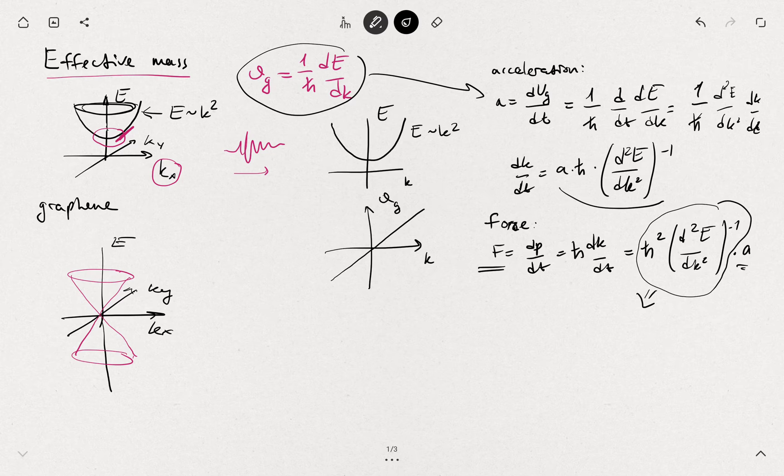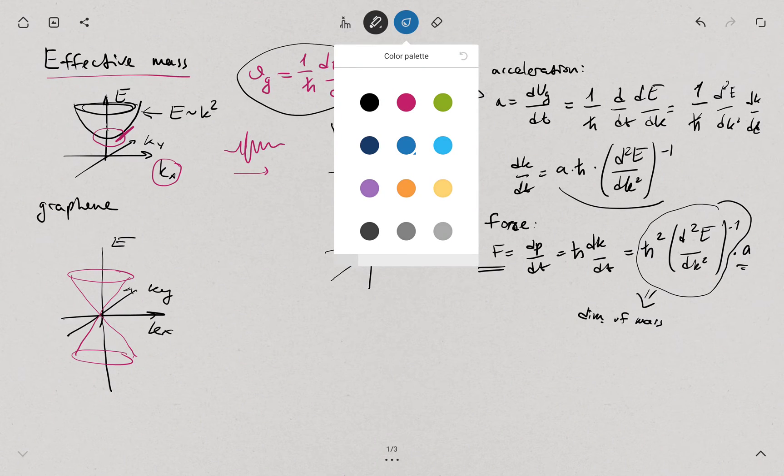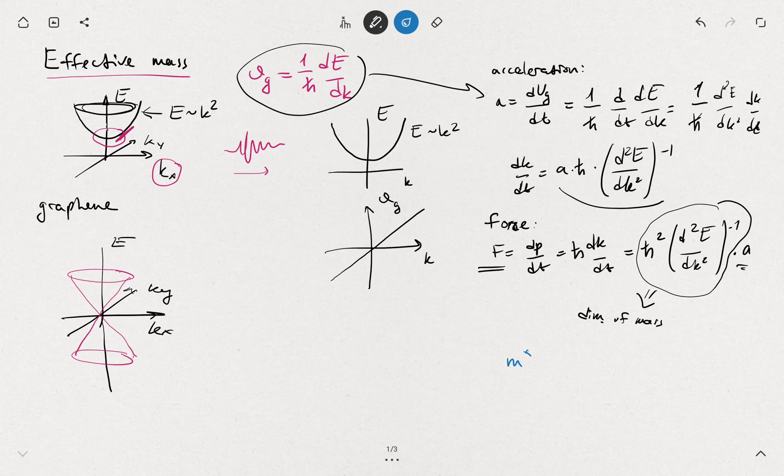This part here actually has a dimension of mass. You can check force equals mass times acceleration, similar to what we did for the Drude model. This is a dimension of mass. That's where the concept of effective mass comes from, usually labeled m*, and you write it as ℏ² (d²E/dk²)⁻¹, so it's inverse curvature of the dispersion relation.